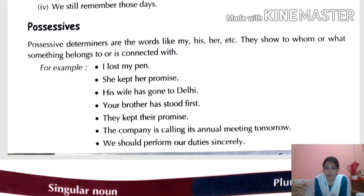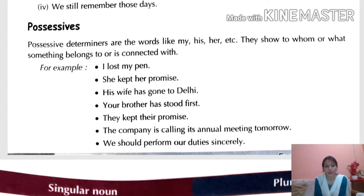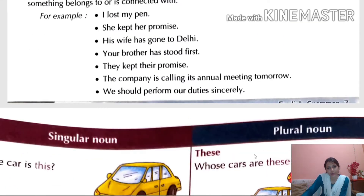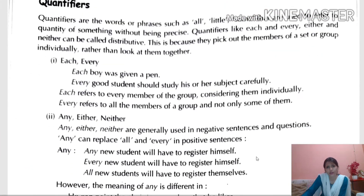'The company is calling its annual meeting tomorrow' — 'its' is the possessive determiner. 'We should perform our duties sincerely' — 'our' is the possessive determiner. I hope there is no confusion. If you still have any questions, you can ask me in the comment section.